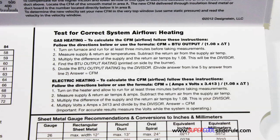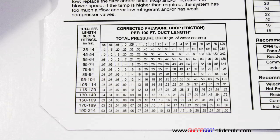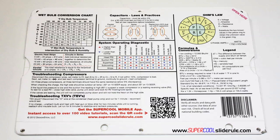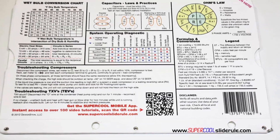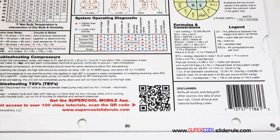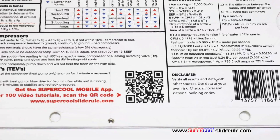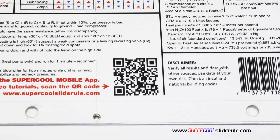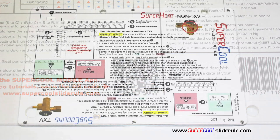It has step-by-step directions for determining airflow through a gas furnace, electric furnace, or an air conditioning unit. It has pressure drop multipliers for ductwork, as well as recommended velocities. And finally, scanning this QR code gives instant access to over 100 tutorials to assist the technician with every test and repair imaginable. You owe it to yourself, as well as your customers, to own this tool.